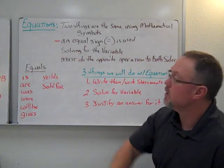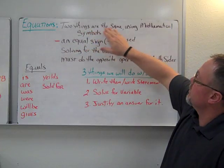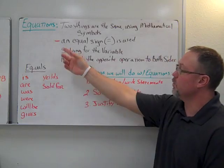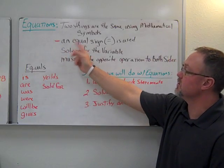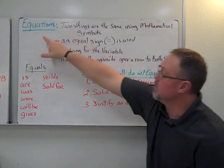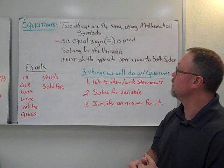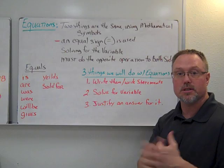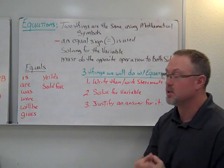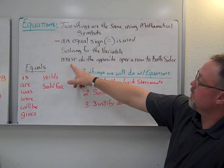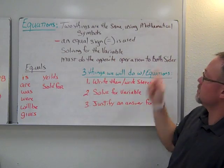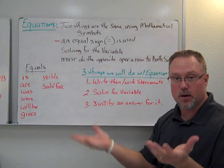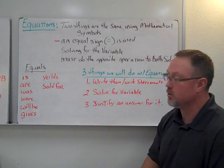Moving on to equations. An equation is two things that are the same using mathematical symbols. One key element of an equation is an equal sign — the word 'equation' comes from 'equal.' We are solving for the variables; we now have two sides of the equation, and to solve it, we must do the opposite operation to both sides. Each side has to equal the other.